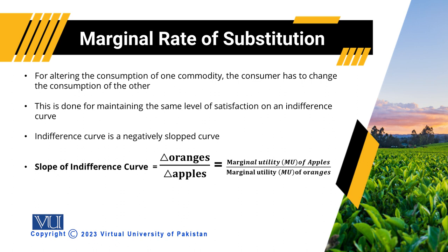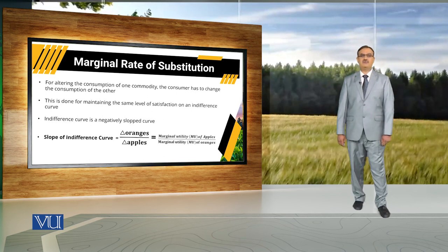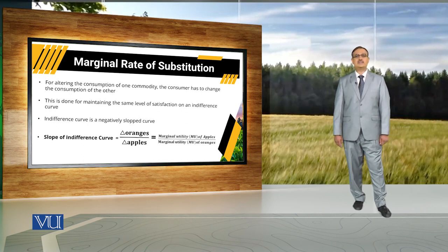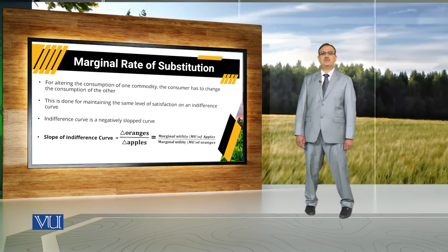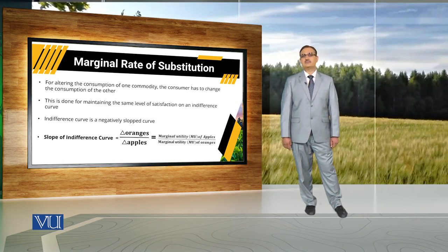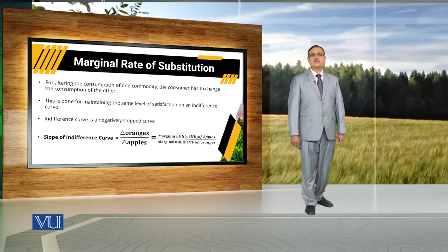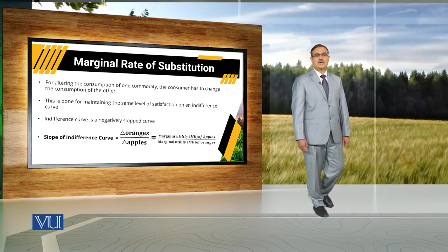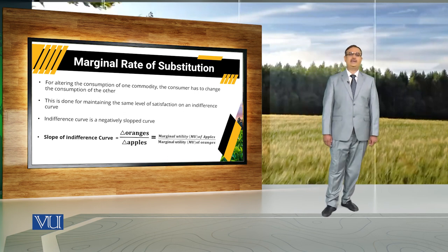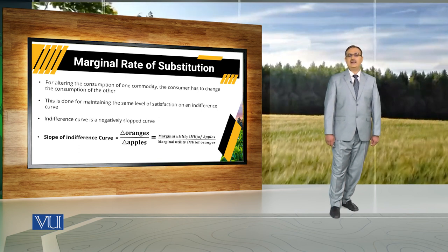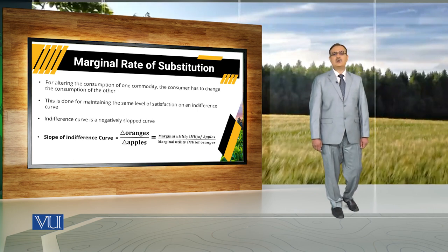An indifference curve is a negatively sloped curve, and its slope is always change in the perpendicular over change in the base. With oranges along the y-axis and apples along the horizontal axis, the slope of an indifference curve is the change in oranges due to a change in apples. This equals the marginal utility from apples over the marginal utility of oranges, where marginal utility is the change in total utility due to a change in consumption of that good.